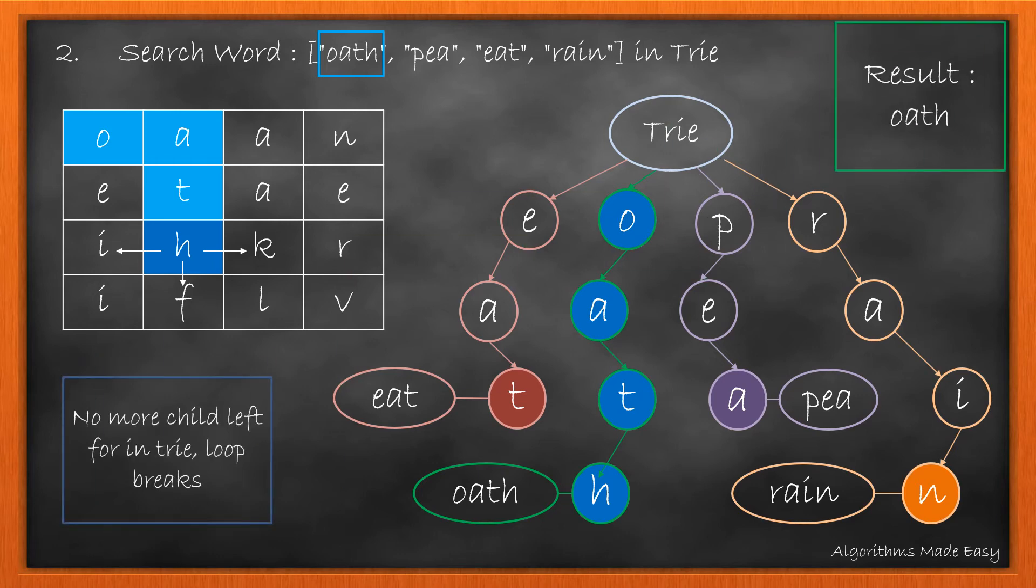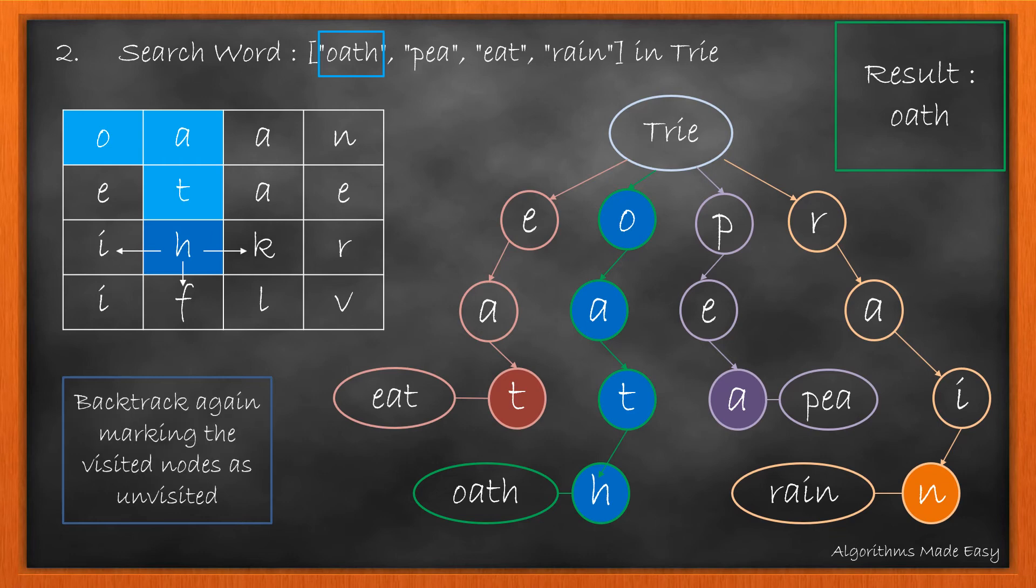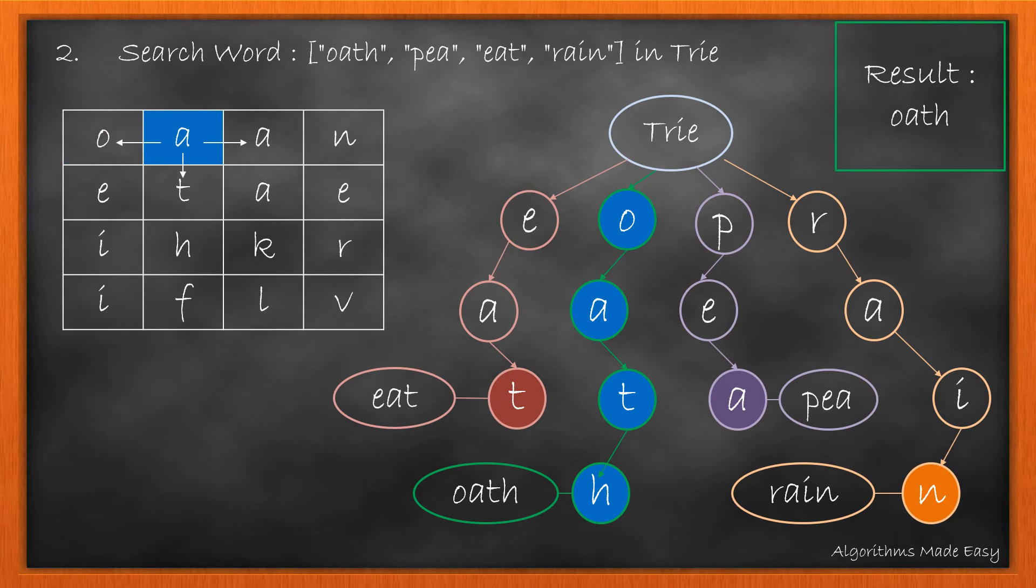As there is no more child left in the Trie after H, our loop breaks. Now we will backtrack to the source. While doing so, we will remove the visited marker from the cell and move to the next cell to check if there exists a word in the Trie with prefix as the current cell value A. As there is none,